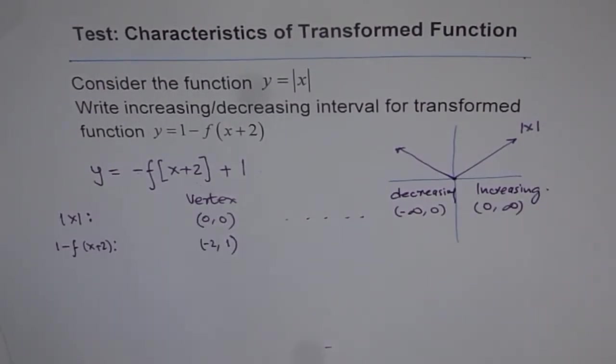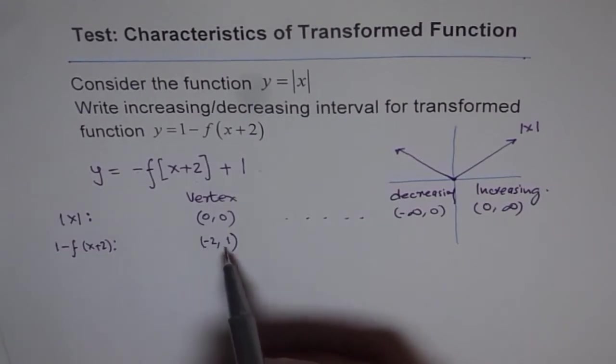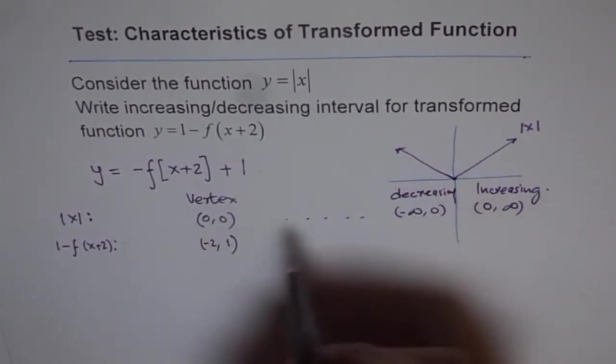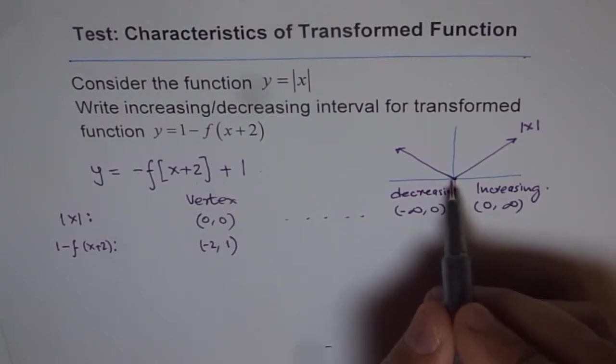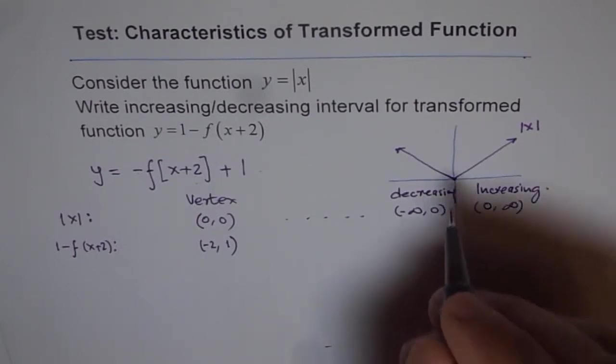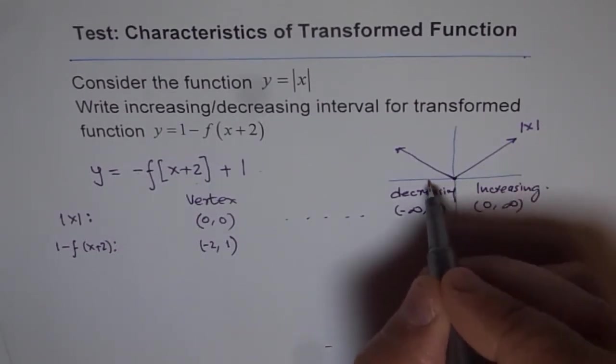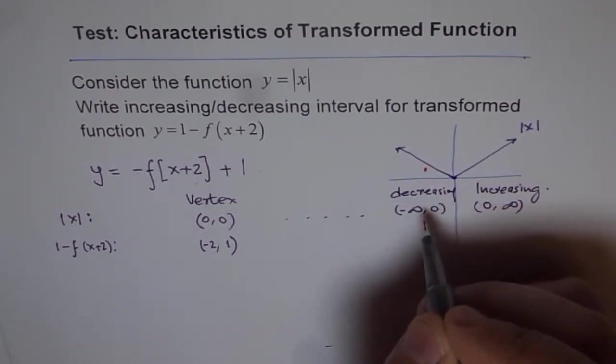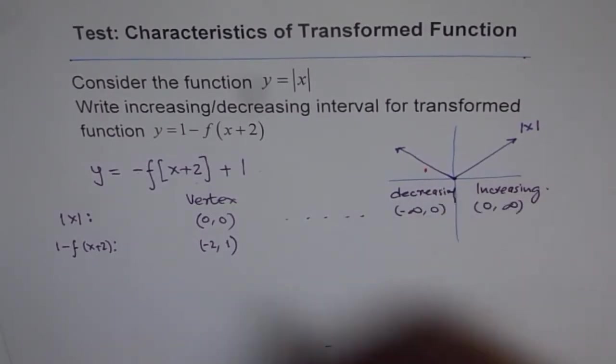This is on our absolute x function. Now what happens on the transform function? First thing, the point changes. So the point changes to minus 2, 1 because of this transformation. So it is now not at 0, 0, but the vertex of this or the corner of our absolute function is now at minus 2, 1. So let us say minus 2 and 1 is kind of here. Let us say this is minus 2, 1.